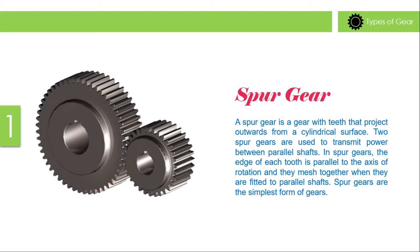Spur gear: A spur gear is a gear with teeth that project outwards from a cylindrical surface. Two spur gears are used to transmit power between parallel shafts. In spur gears, the edge of each tooth is parallel to the axis of rotation, and they mesh together when fitted to parallel shafts. Spur gears are the simplest form of gears.